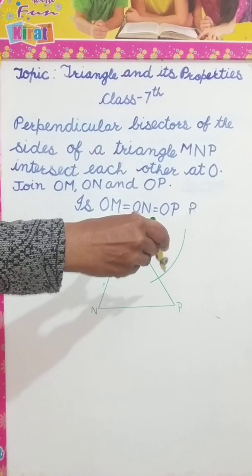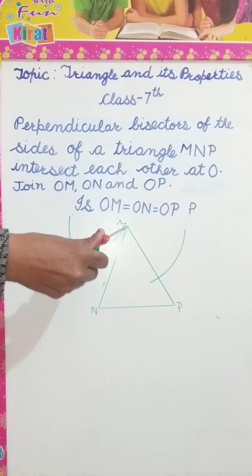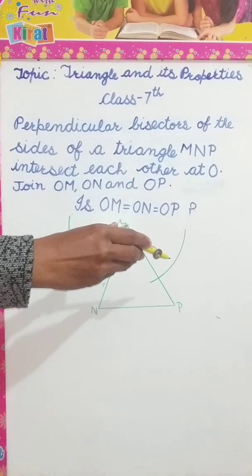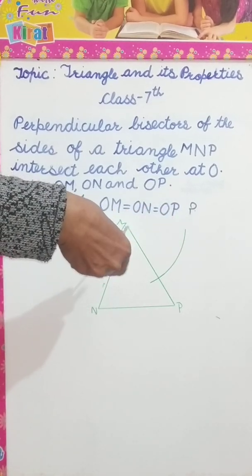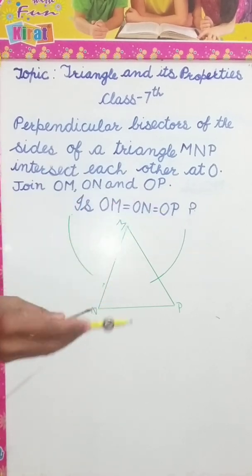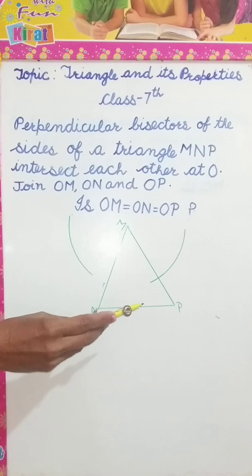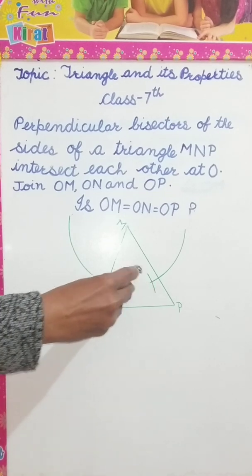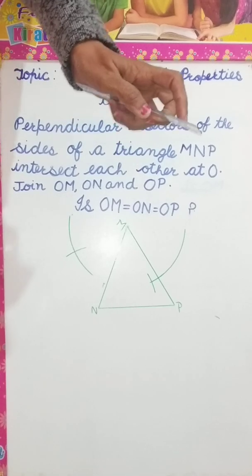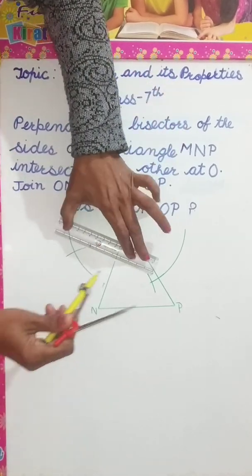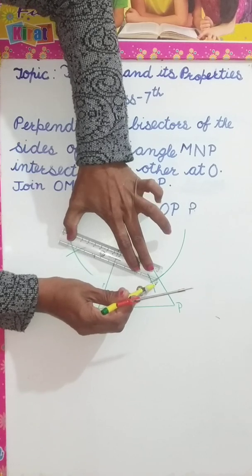On the upper side also, like semi-circle. This way and this way. I am not taking semi-circle but. And now, taking N as a center, draw this. Now, what we have to do, we will join these intersecting points with dotted lines.